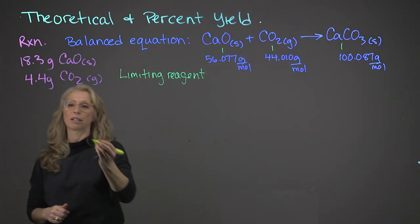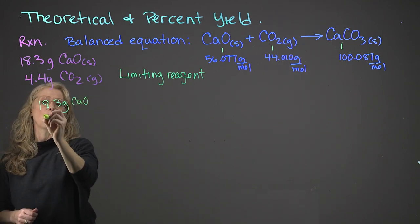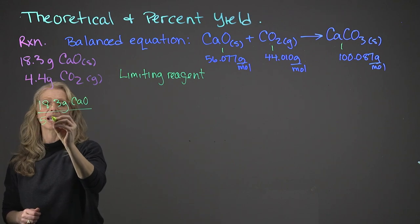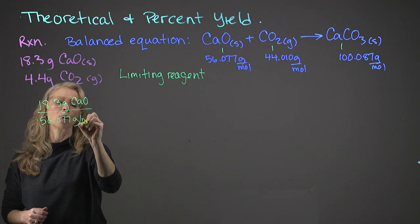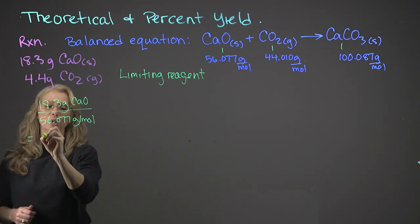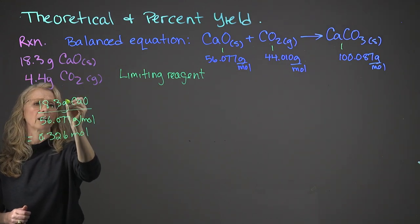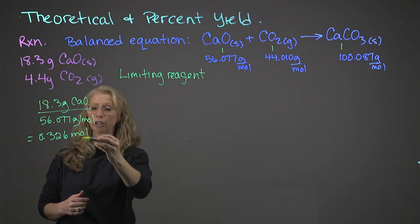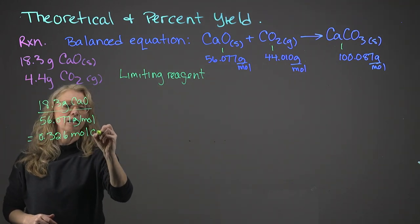Let's start with the calcium oxide. So we have 18.3 grams of the calcium oxide. We want to know how many moles that is. So we are going to divide it by the molar mass of the calcium oxide, which is 56.077 grams per mole. And this will give us a value of 0.326 moles. Showing that our grams are actually canceling out, and our moles, when it's the denominator in a denominator, moves up to the numerator. And that's our calcium oxide.